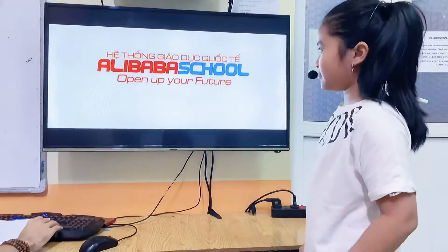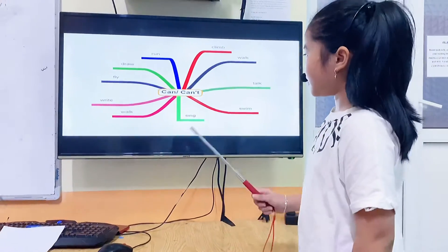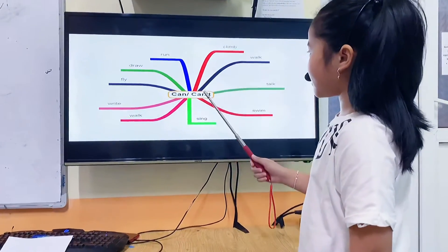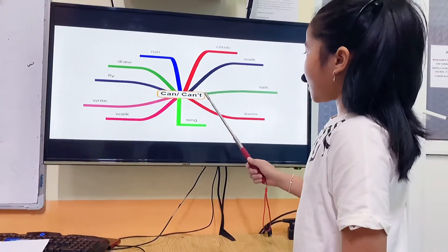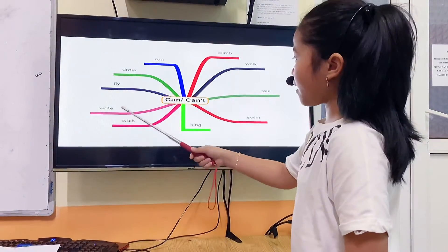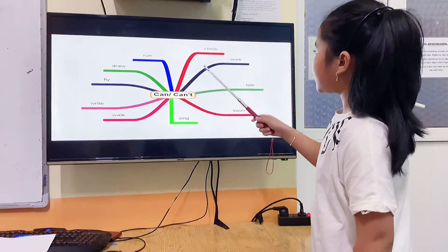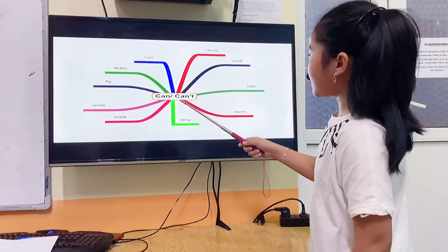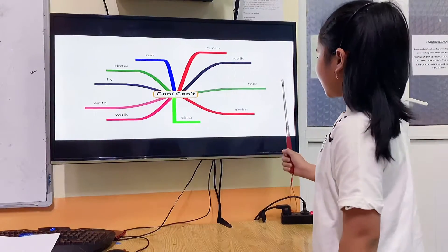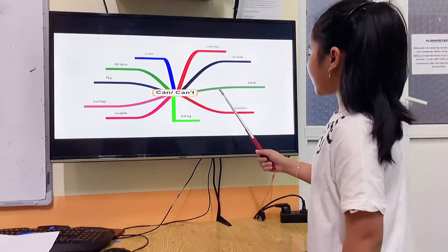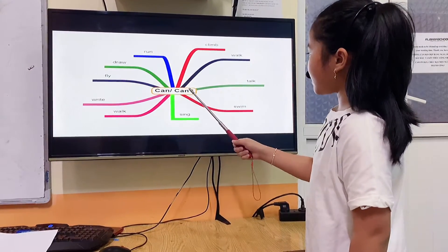Take a pointer and let's start. Tell me what can you do and what can't. I can run. I can draw. I can fly. I can ride. I can walk. I can swim.